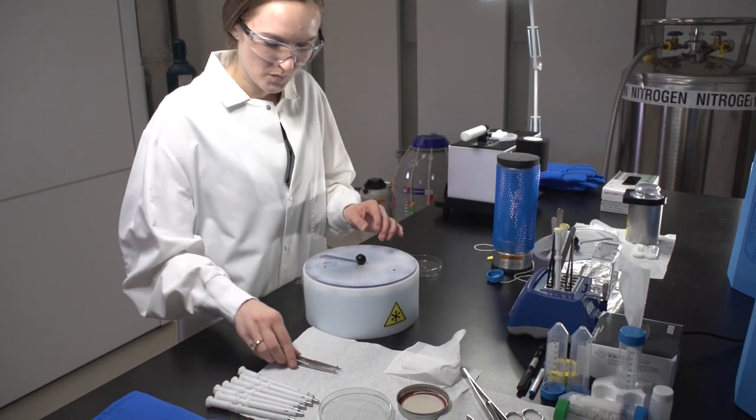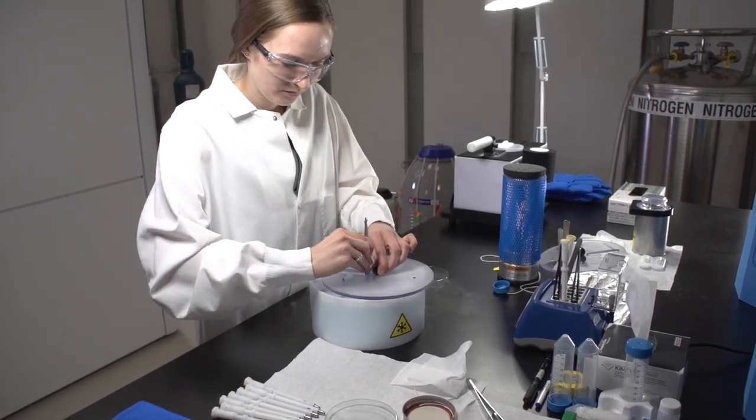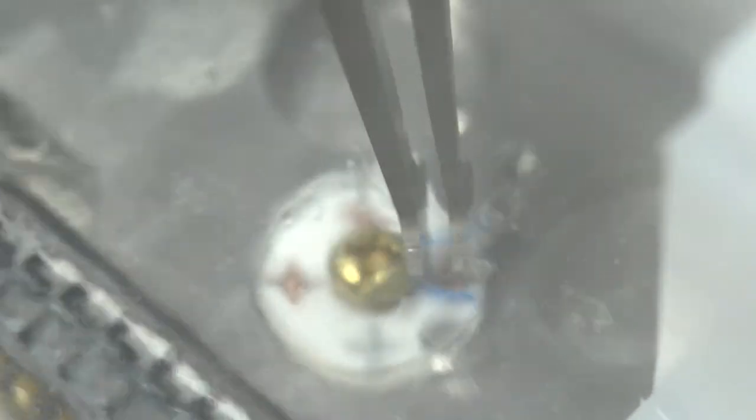The following procedures are done in liquid nitrogen while carefully preventing contamination from atmospheric water. The EM grid is placed into a cartridge that facilitates robotic handling of the specimen inside the microscope.